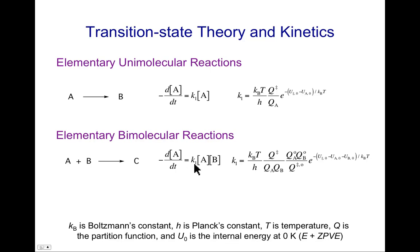That would be equal to K, and I'll still use a subscript 1 there, times concentration of A, times concentration of B. And here, K₁ is KT over H. Again, partition function for the transition state divided by the two partition functions for the individual species.